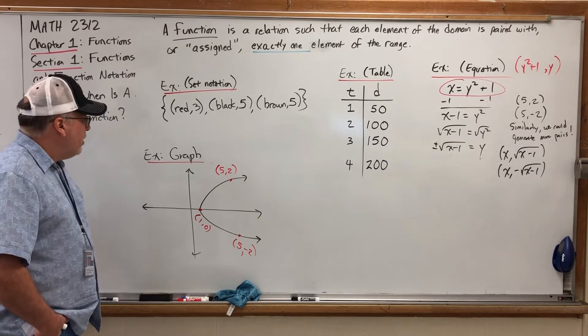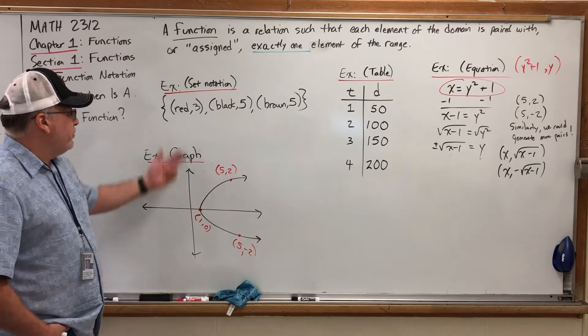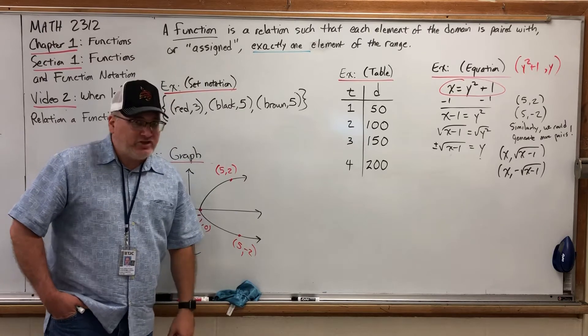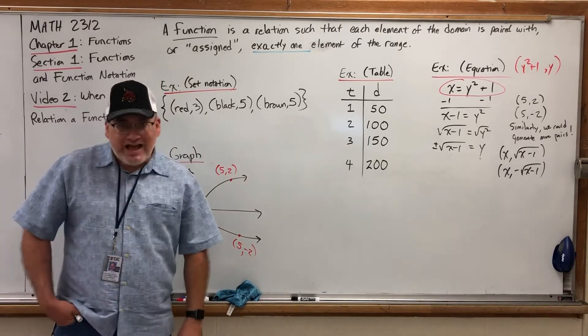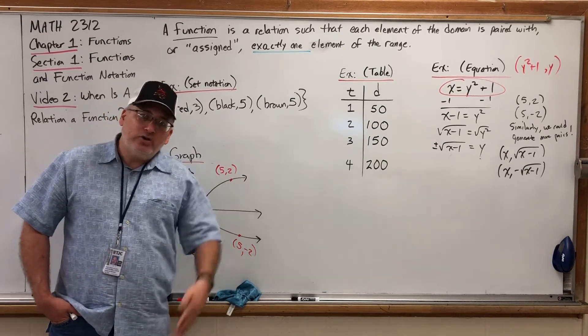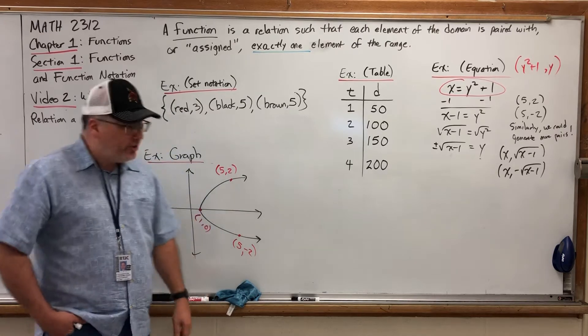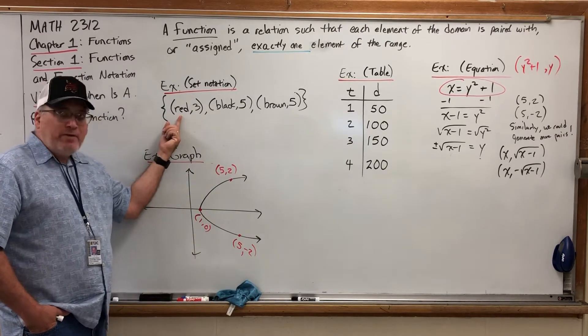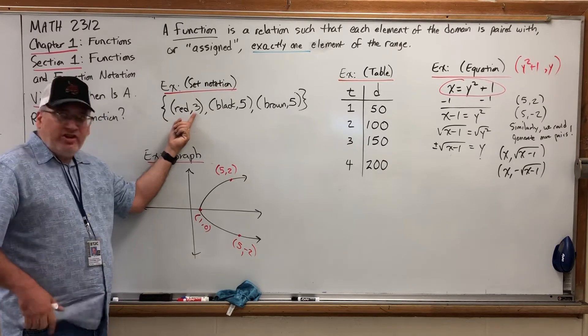Do you think each element of the domain is paired with exactly one element of the range? Well, let's see. Our domain contains three values, red, black, and brown. And so each one of those words, we have to ask a question. The question we're going to ask is, how many values from the range are you paired with?